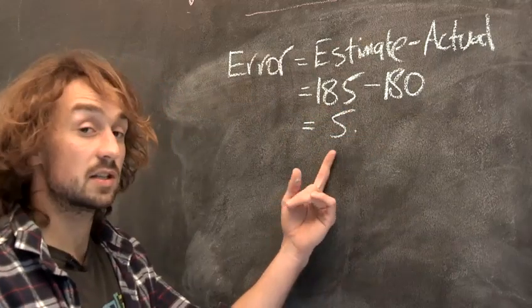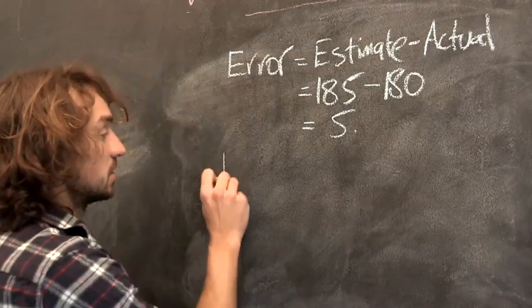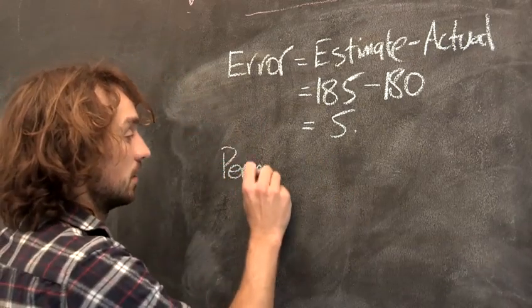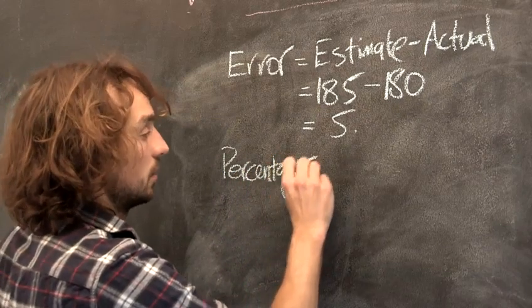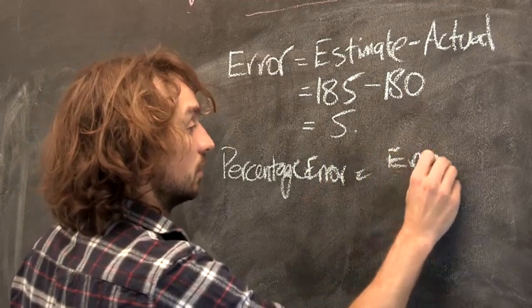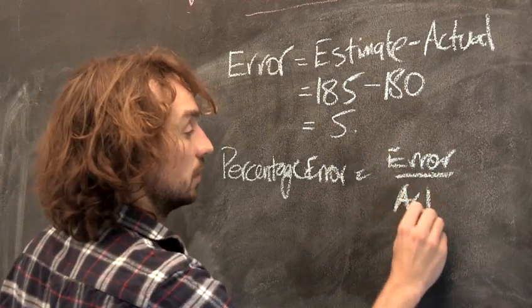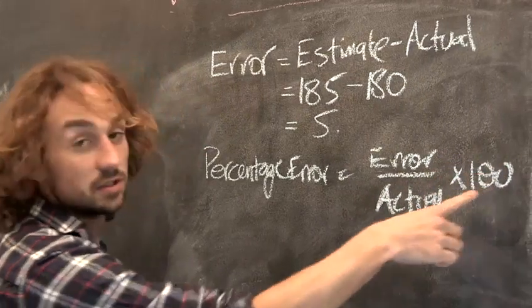So we've got our error. Now how do we turn that into percentage error? So what you do is you take this. Percentage error is your error divided by actual and you multiply by 100 to put it into a percentage.